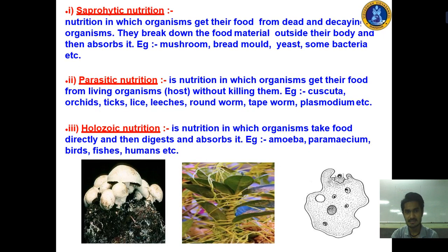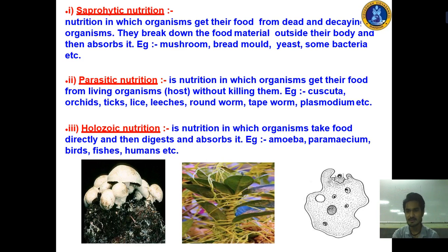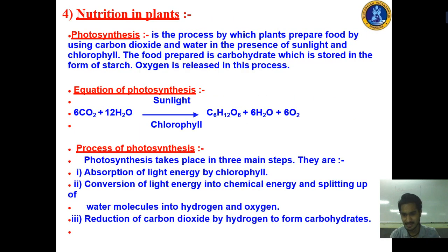We also discussed the three types of heterotrophic nutrition: saprophytic nutrition, parasitic nutrition, and holozoic nutrition. In saprophytic nutrition, organisms get food from dead and decaying organisms — examples are mushrooms, yeast, and bacteria. In parasitic nutrition, organisms get food from a host without killing them — examples are cuscuta plant, leeches, roundworm, tapeworm, and plasmodium. Holozoic nutrition is what we do in day-to-day life — organisms take food directly, then digest and absorb it. Examples include amoeba, human beings, and birds.